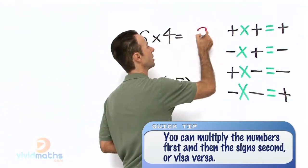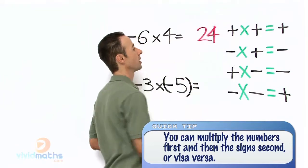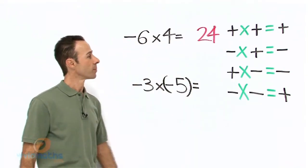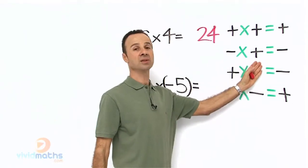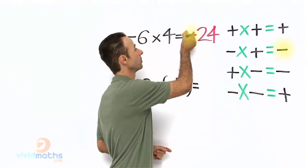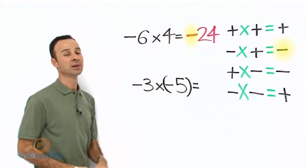Let's write that in, and then we look at the sign. Minus times a plus gives us a minus. That's right, let's put the minus up front. So minus six times four equals minus twenty-four.